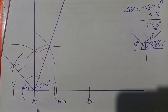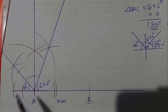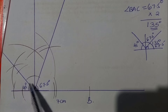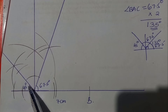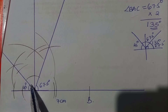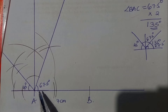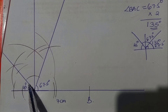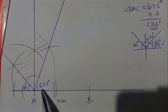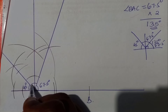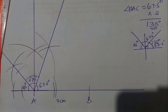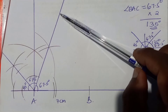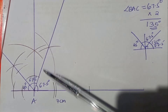So we started by constructing 90 degrees here. On the left-hand side we have 90, on the right-hand side you have 90. We bisected the 90 degrees on the left-hand side to get 45 degrees. The remaining angle is 135, based on the sum of angles on a straight line. We then bisected 135 to get 67.5 degrees. Point C lies on this line, and this is the line you're supposed to use to divide AB.